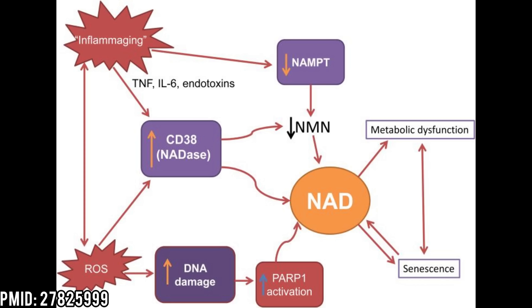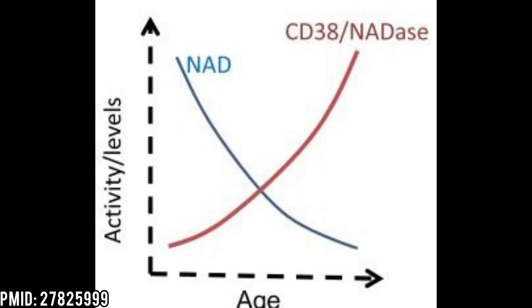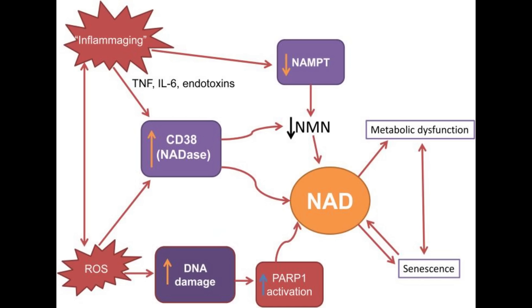The primary reason you see a decrease in NAD with age is because NAD is being degraded and destroyed by oxidative stress and inflammation. The main protein responsible for that is CD38. With age, you see an increase in CD38 and a corresponding decrease in NAD levels. So before you start taking NAD boosters, you first have to make sure you don't have excess CD38 that's going to destroy your NAD.